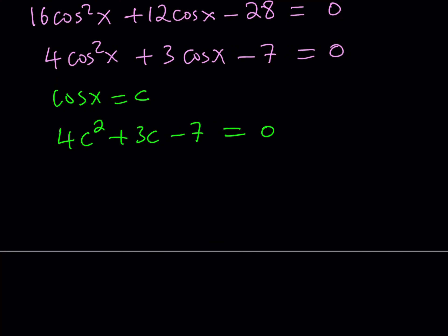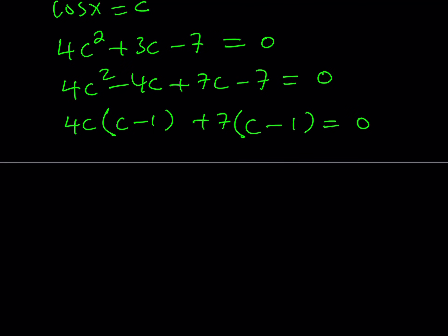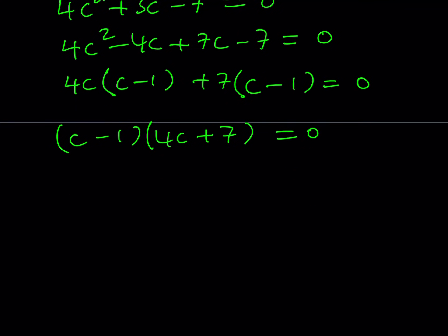Since c equals 1 is a solution, I can factor it. I write it as 4c squared minus 4c plus 7c minus 7, which gives 4c times the quantity c minus 1, plus 7 times the quantity c minus 1. Taking out the factor c minus 1, we get c minus 1 times 4c plus 7 equals 0. From here we get two solutions: either c equals 1 or c equals negative 7 fourths.